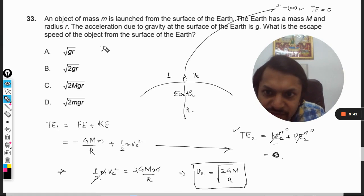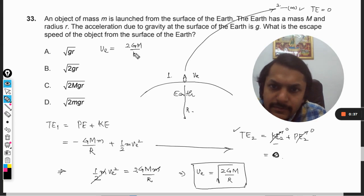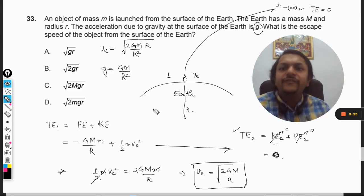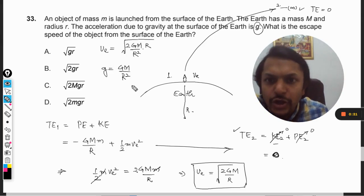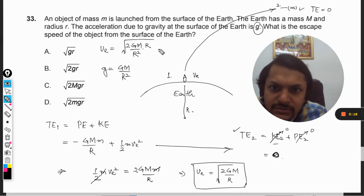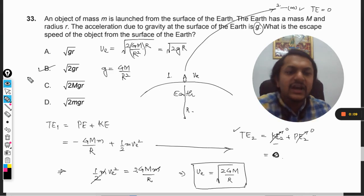Now this VE can be written as this also. We need to find this in terms of small g, and we know that small g is GM by R squared. So what we do is we multiply R in the numerator as well as in the denominator. This GM/R² becomes g, so it can be written as square root of 2gR. Hence the answer is B.